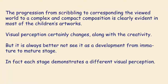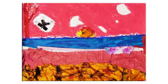The progression from scribbling to images corresponding to the viewed world, to a complex and very compact composition, is clearly evident in most children's artworks. Visual perception certainly changes along with creativity, but it is always better not to see it as a development from an immature to a mature stage. In fact, each stage demonstrates a different visual perception. You can look at various examples of child art and see that in spite of a common pattern, child art is also subject to an unimaginable range of variations.